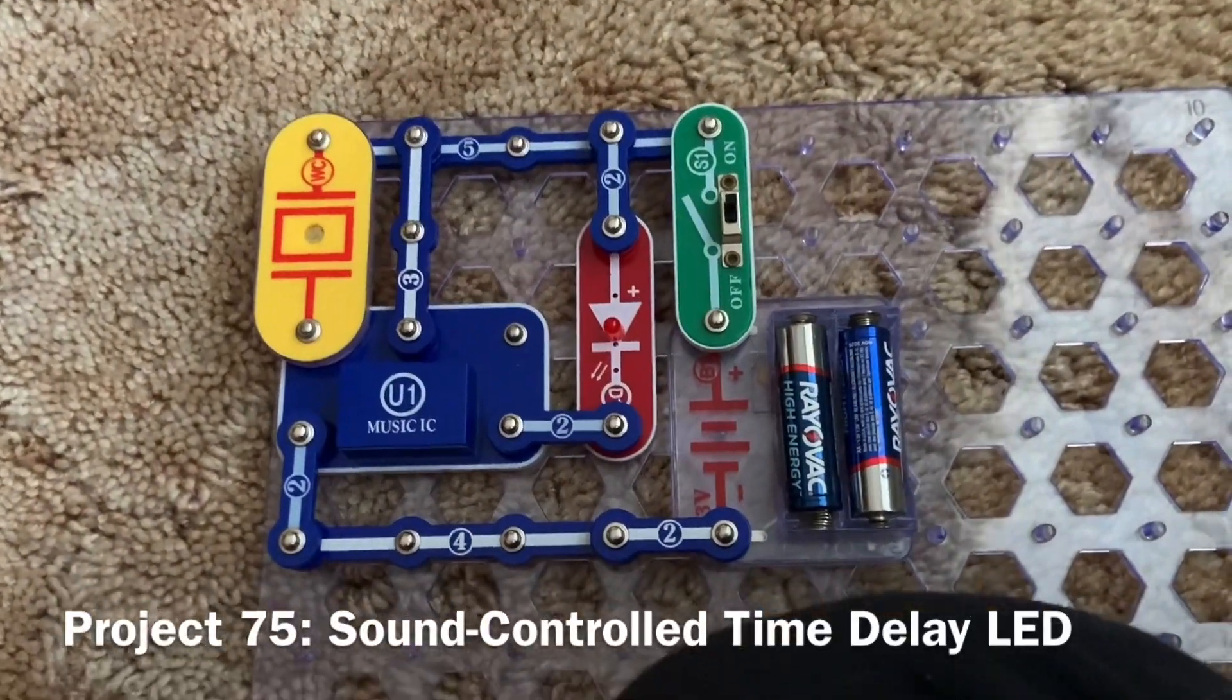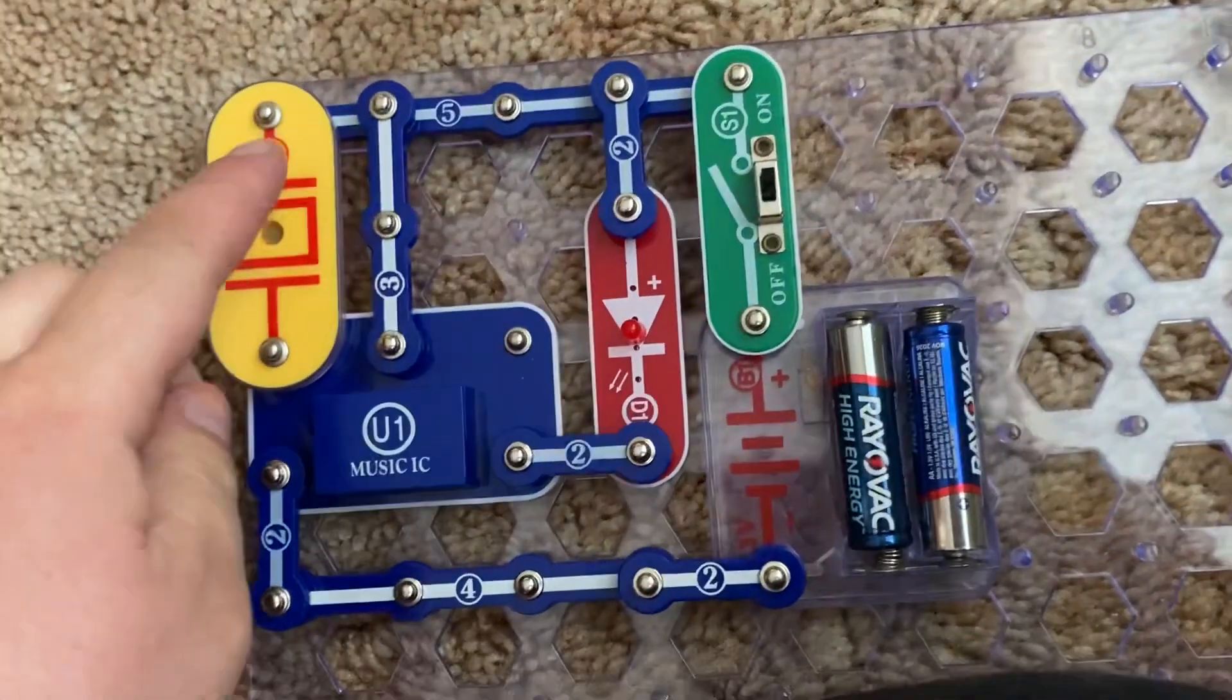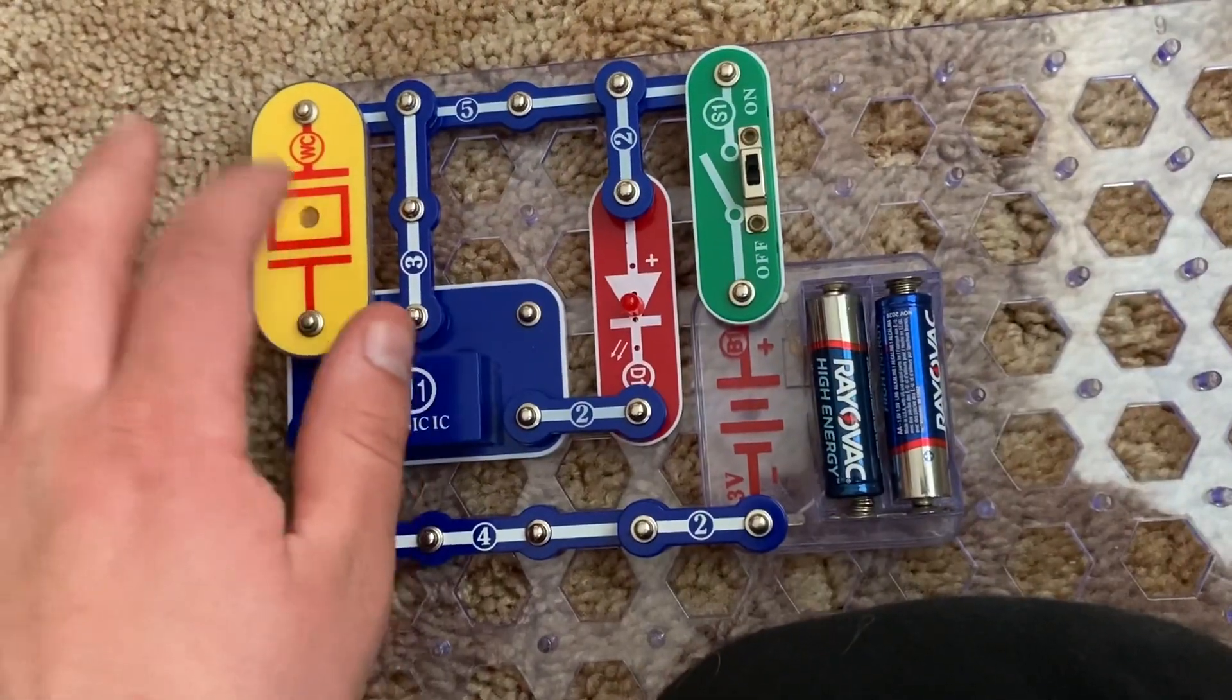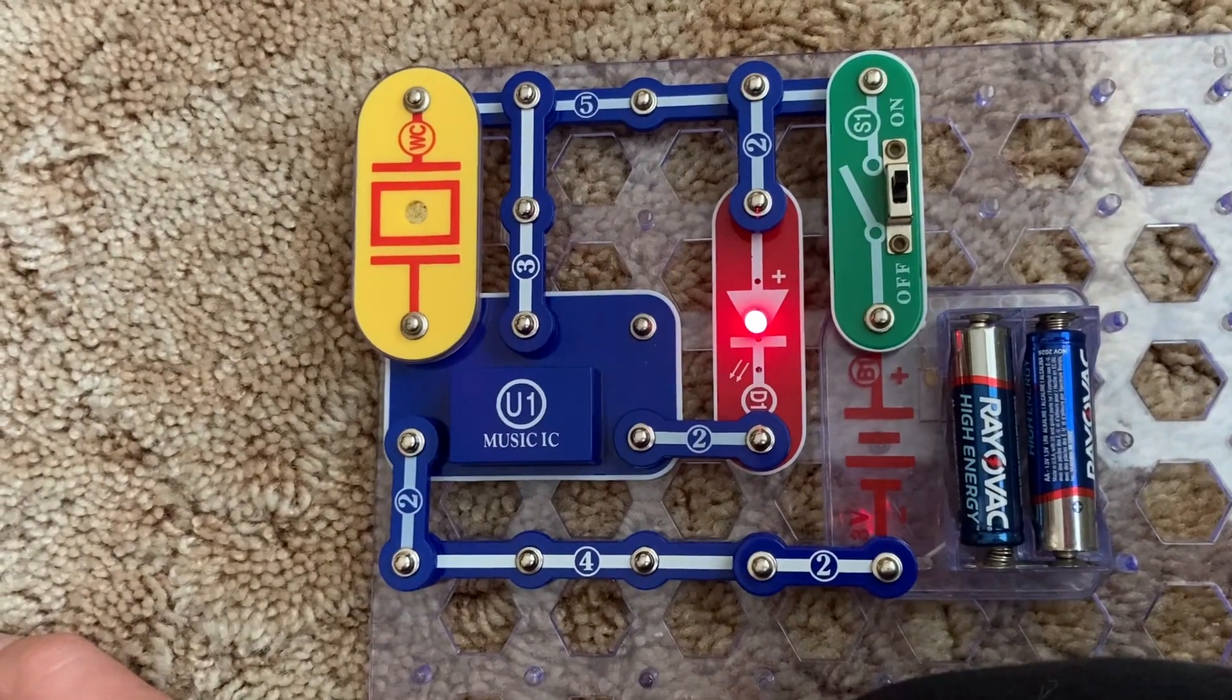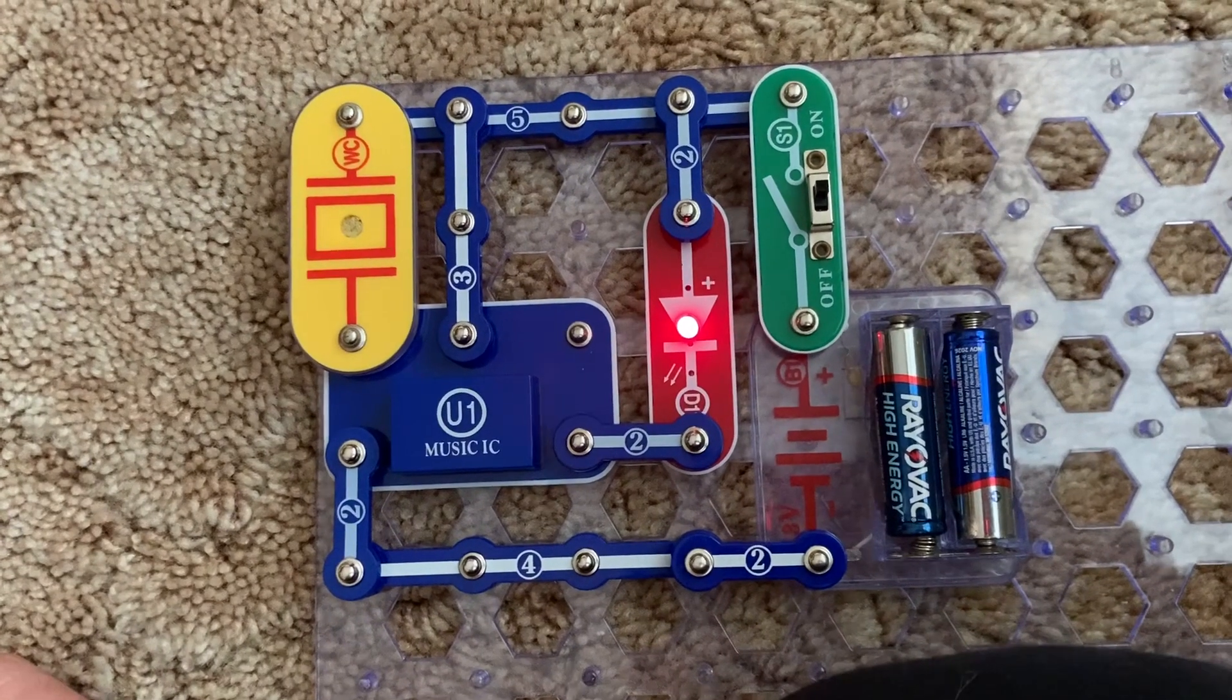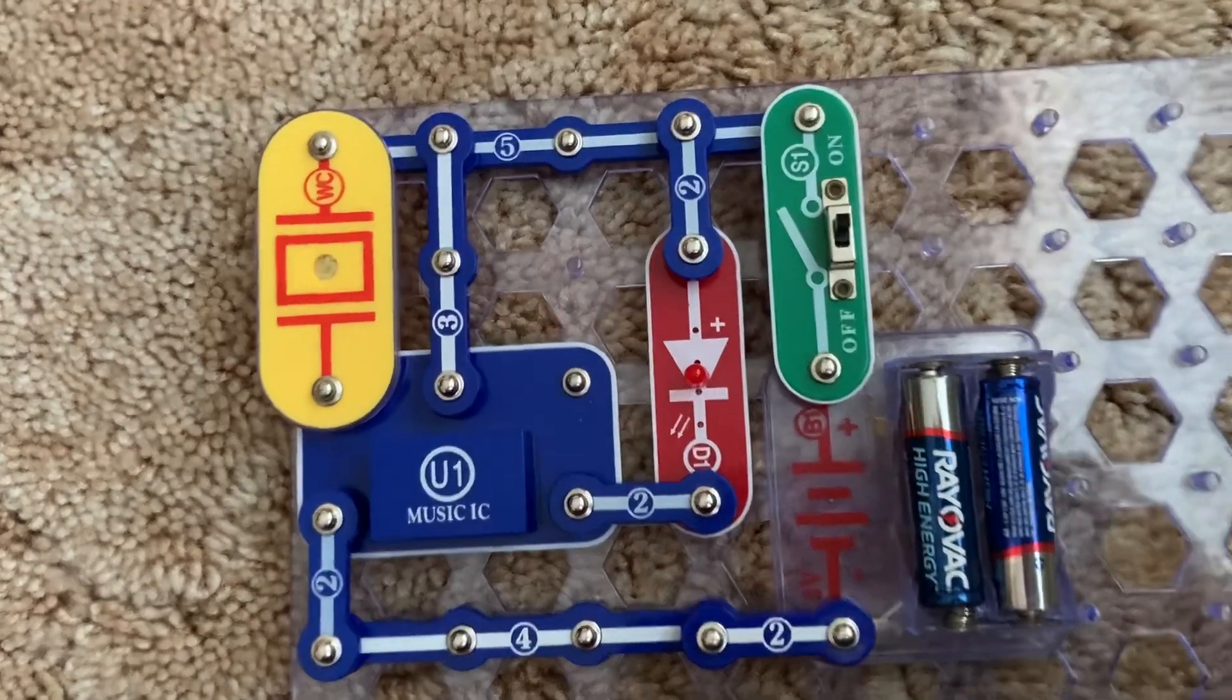Project 75 is sound control time delay LED. After I connect the whistle chip between these two points, I will tap the whistle chip and the red LED comes on. This circuit uses the same principle as in Project 72, except now I'm using the LED.